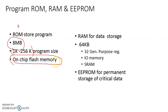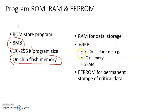Now, RAM: for the storage of data, generally AVR has 64 kilobytes of RAM, which is divided into 32 general purpose registers. Some of this RAM is mapped for I/O memory.